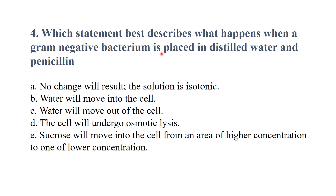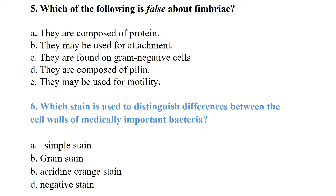Which statement best describes what happens when a gram-negative bacterium is placed in distilled water and penicillin? Penicillin has no effect on gram-negative bacteria due to the presence of the outer membrane. Pores form, and water moves into the cell, forming spheroplasts.